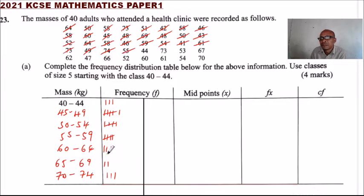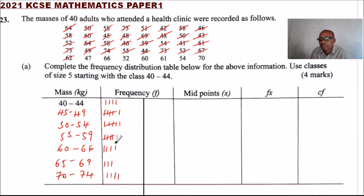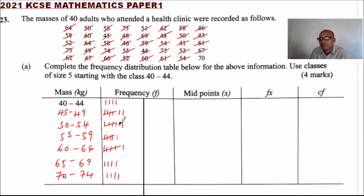59 is here. We close that. 54 is here. We have 41 — 41 is there. We have 61 — 61 is there. We have 73 — 73 is here. 49, we have here. 74, we have there. 55, we have there. 44 is there. 73 we have here. 53, we have here. 67, we have here. 62, we have here. 47, we have there. 66, we have there. 52 is there. 60, we close that. 61, we have there. 54, we have there. 70 — we close there.